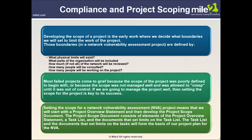Regarding compliance and project scoping, developing the scope of a project is early work where we decide what boundaries to set to limit the work. In network vulnerability assessment projects, these boundaries are defined by what physical limits will exist, what parts of the organization will be included, how much of the network will be reviewed, how many people will be consulted, and how many will be working on the project. Most failed projects come to grief because the scope was poorly defined or not managed well.